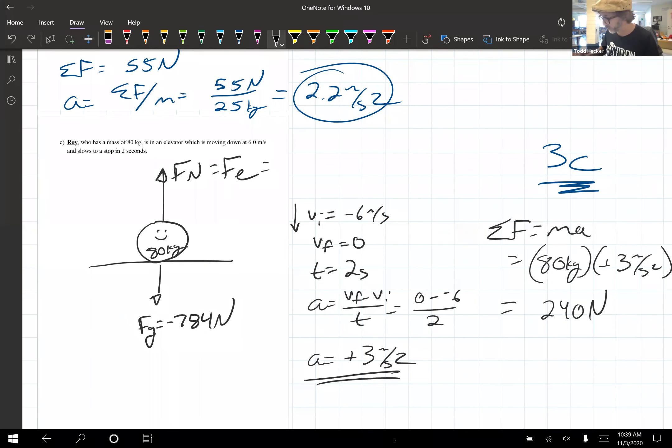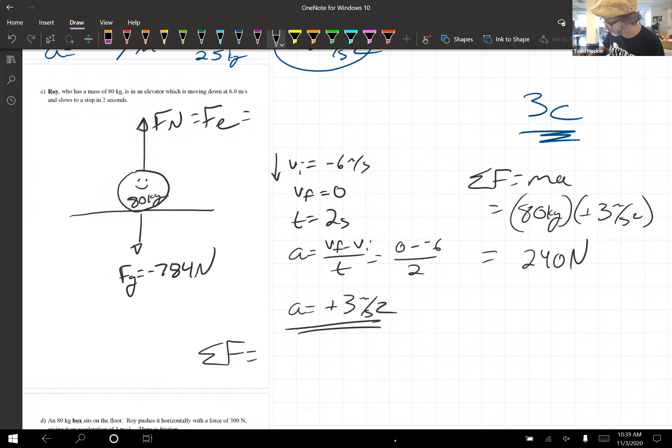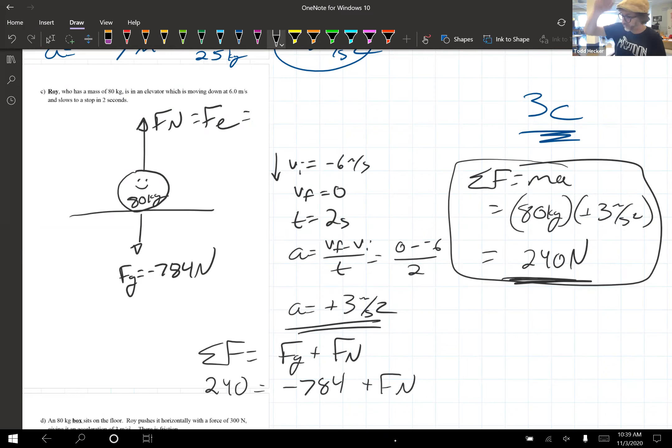So now we can solve for it. I'm just going to go, oh well, net force is my total force. So it's gravity plus the normal force from the elevator. So 240 newtons is my net force. That's got to equal my force of gravity, negative 784 plus the normal force. Add 784 to both sides and you get a number that I don't remember.